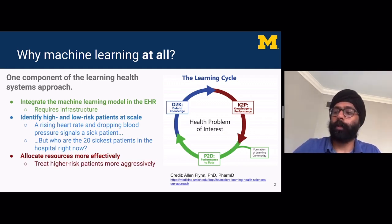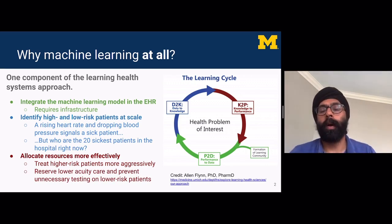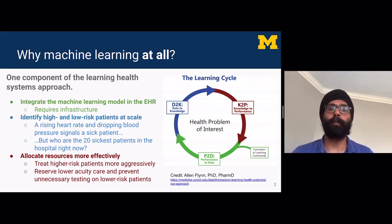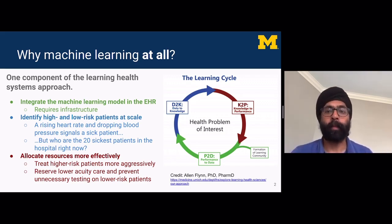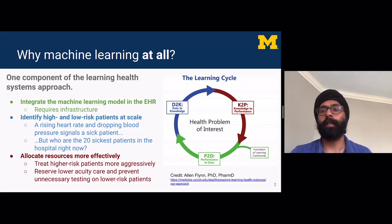If you can figure out who those high-risk or low-risk patients are, you can then allocate resources more effectively. This is the knowledge-to-performance step, where you can either by adding an intervention or by changing your workflow align your resources a bit better. You can treat higher-risk patients more aggressively, or reserve lower-acuity care and prevent unnecessary testing on lower-risk patients. For example, one area where we want to identify low-risk patients is in trying to enroll patients in our hospital care at home program — patients who come into our ER who are high enough risk to need hospitalization but low enough risk to be safely hospitalized at home with remote monitoring and nurses coming to their house.